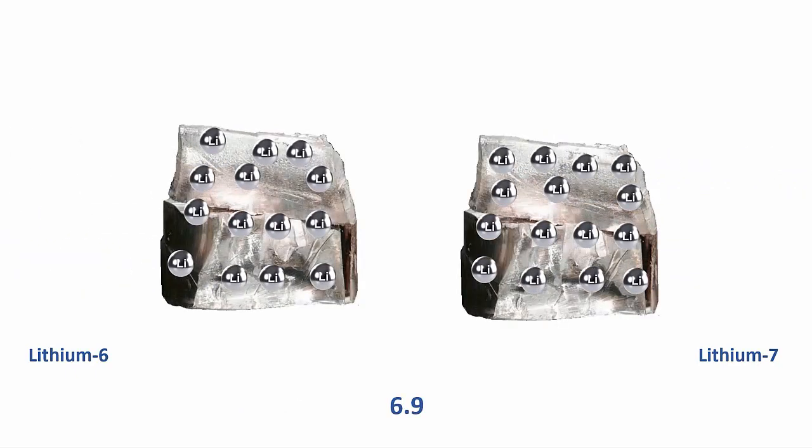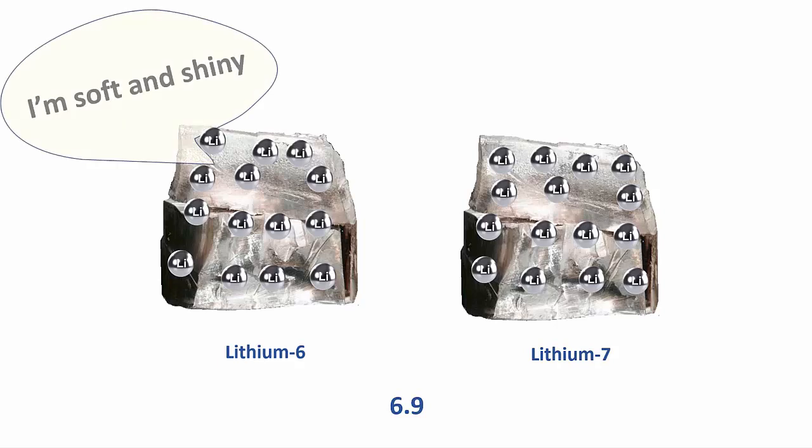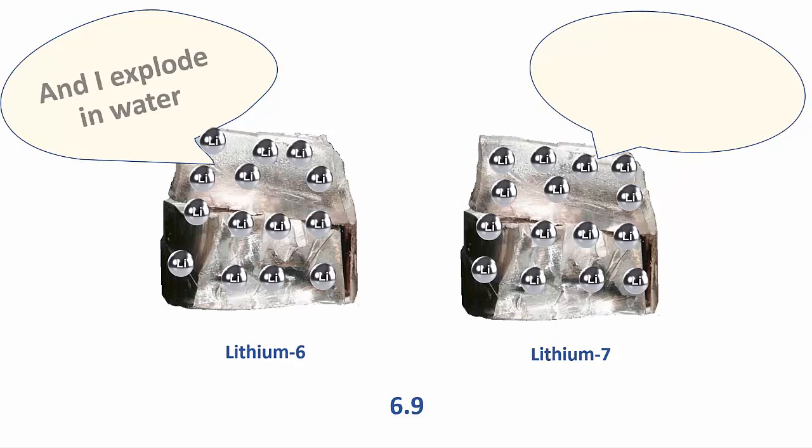If we separate the isotopes into one bit all made of lithium-6 atoms and the other bit all made of lithium-7 atoms, we could hardly tell them apart. They'd both be soft and shiny like lithium. And both explode in water like lithium. Because they both are lithium.